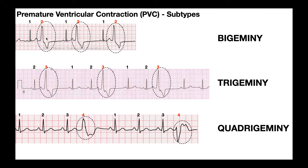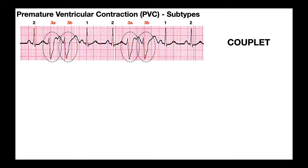Notice that in each of those cases, every PVC is separated by at least one normal QRS. That's not necessarily always the case, because here we have what's called couplets. Couplets occur when two PVCs occur in a row with no normal QRS separating them. You can clearly see two PVCs in a row here — this would be one couplet. There's also two in a row over here — that would be a second couplet.